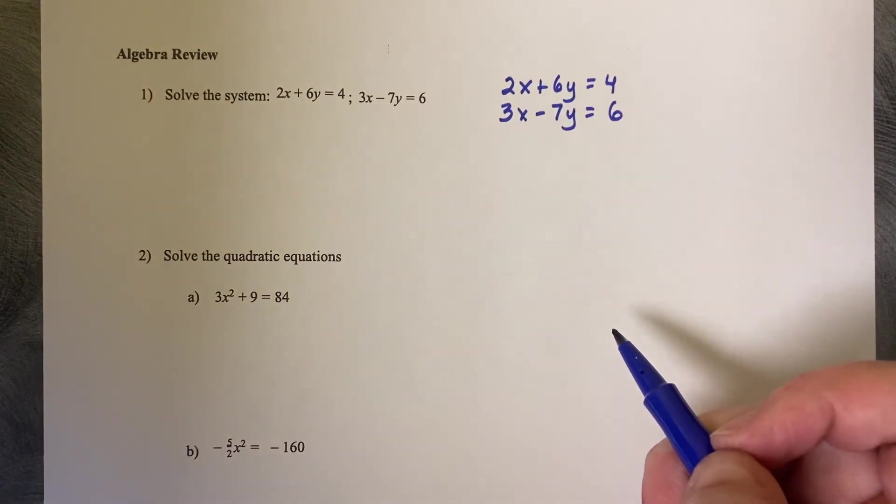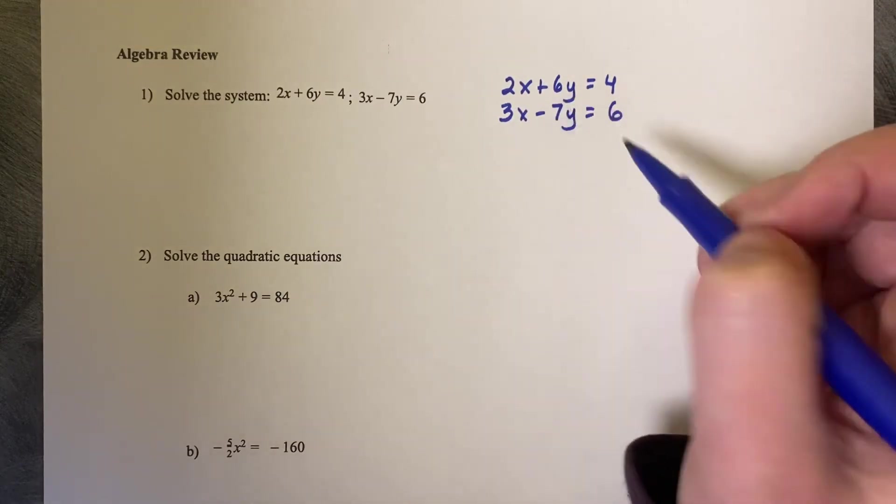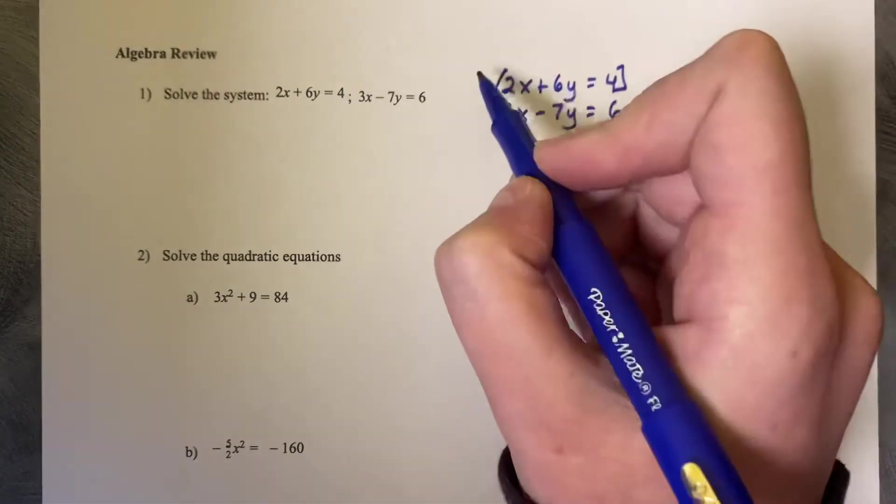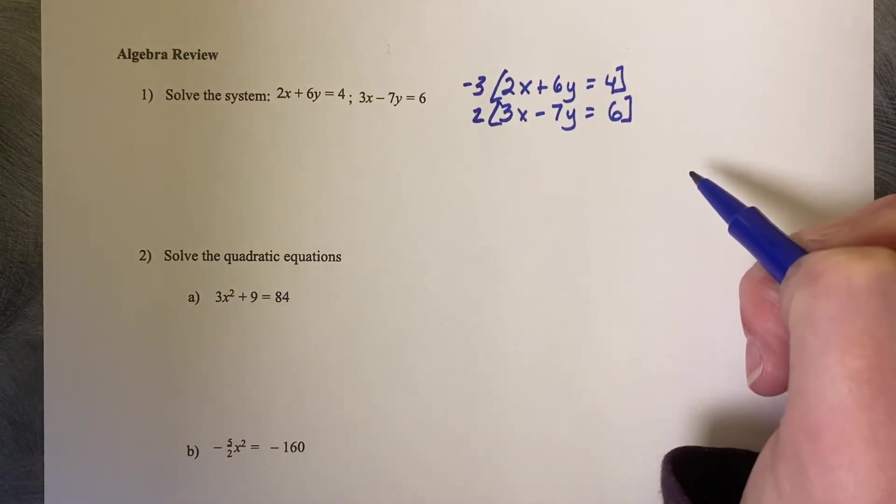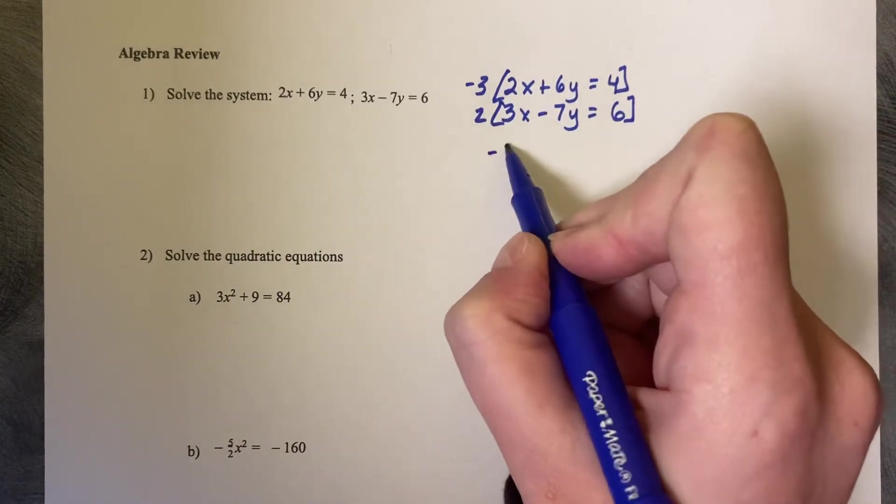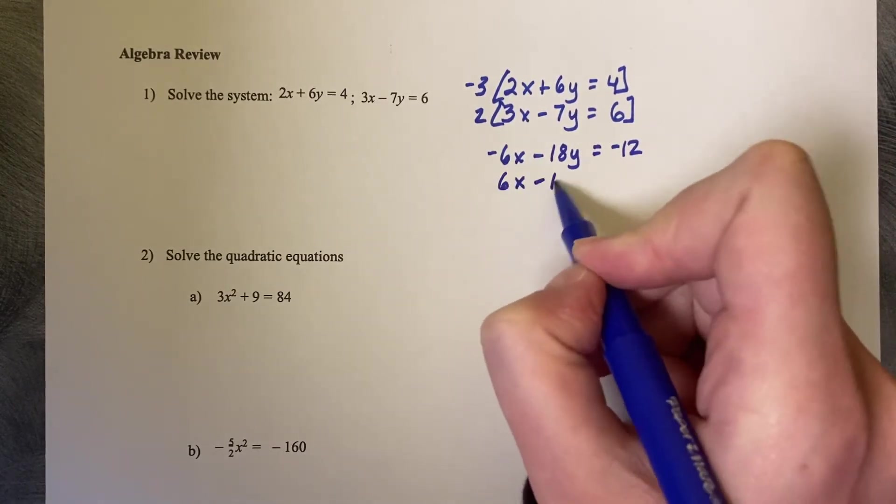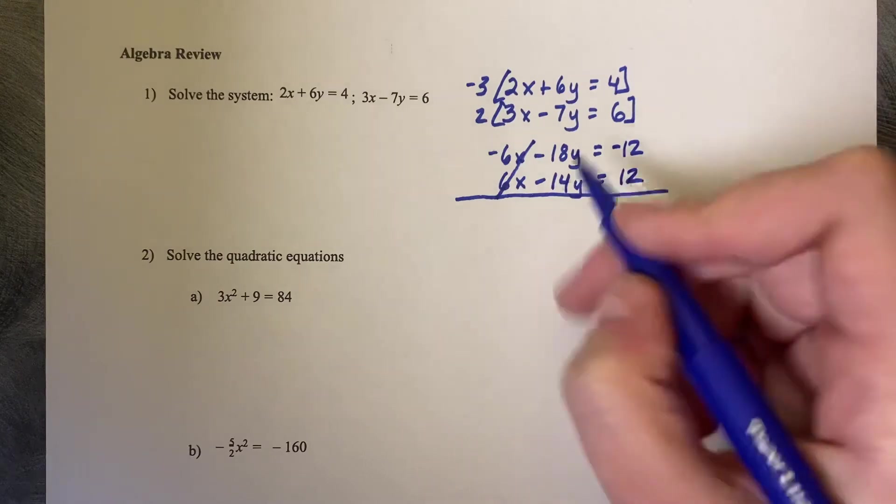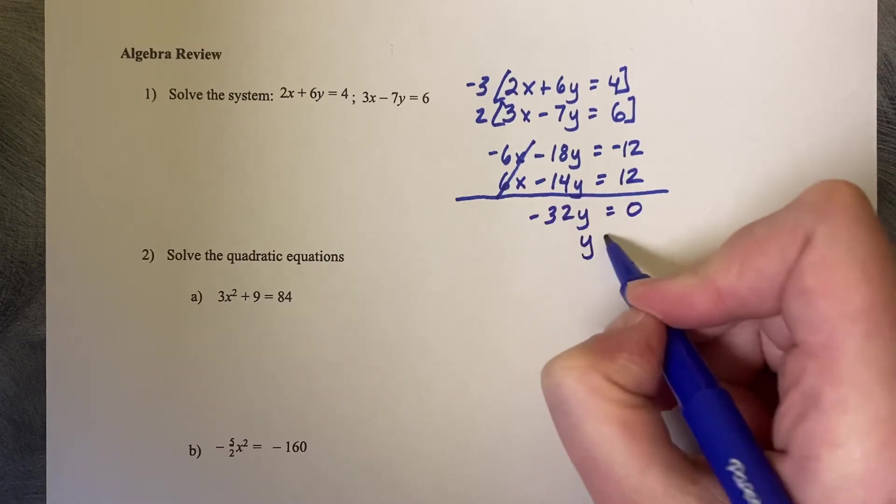This system is set up for elimination because the x's and the y's are on the same side. But I noticed that nothing is ready to be eliminated. So I'm going to make the 2 and the 3 become a 6. So I'm going to multiply the top by negative 3 and the bottom by a positive 2, so that I have one positive 6 and one negative 6. So then we've got negative 6x minus 18y equals negative 12, and 6x minus 14y equals 12. Now I'm ready to add these together. The 6x's cancel, and we're left with negative 32y equals 0.